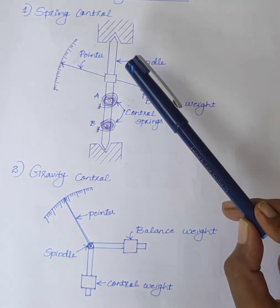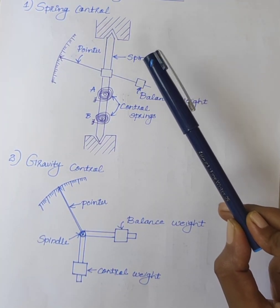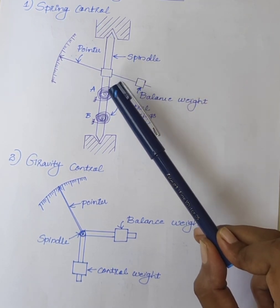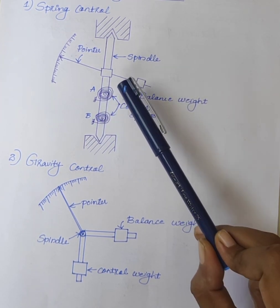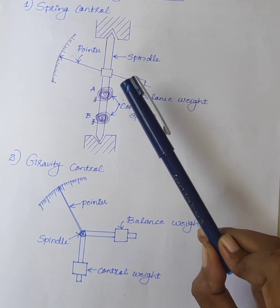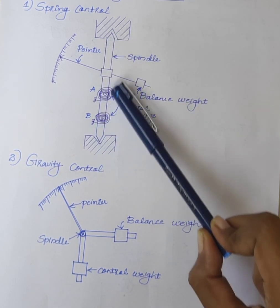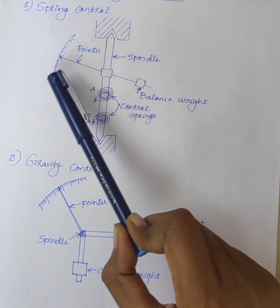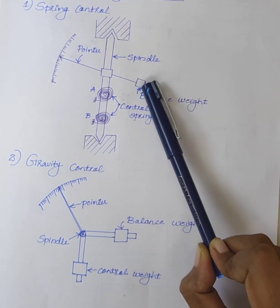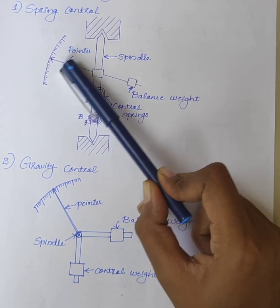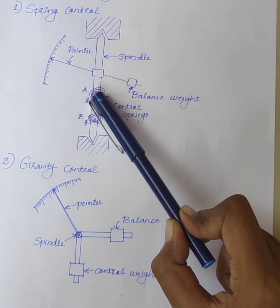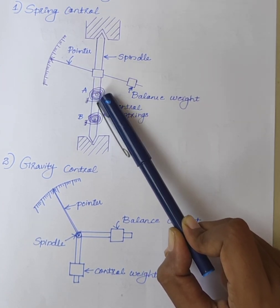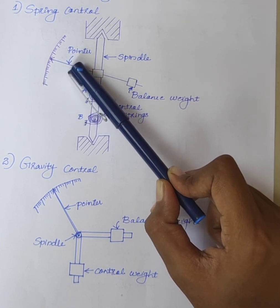The first method is spring control. Spring control is the most common method of providing controlling torque in electrical instruments. It may involve one or more springs. A spiral hair spring made up of phosphor bronze is attached to the moving system. This one is the spindle, and this one is the pointer and scale arrangement. This one is the balance weight. When the pointer deflects, the spring twists in the opposite direction, producing a restoring torque proportional to the angle of deflection of the moving system.